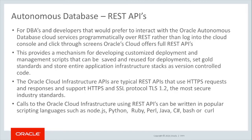The Oracle Cloud Infrastructure APIs are typical REST APIs that use HTTPS requests and responses and support HTTPS and SSL protocol TLS 1.2, the most secure industry standards. Calls to the Oracle Cloud Infrastructure using REST APIs can be written in popular scripting languages such as Node.js, Python, Ruby, Perl, Java, C, Bash, or Curl.